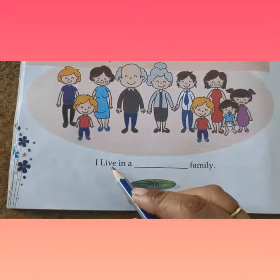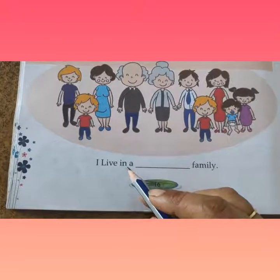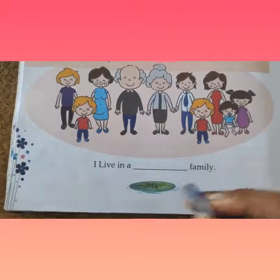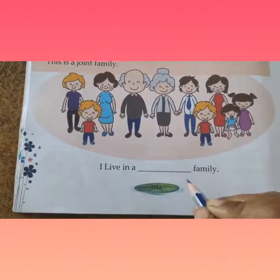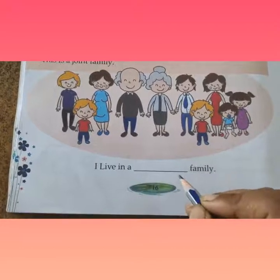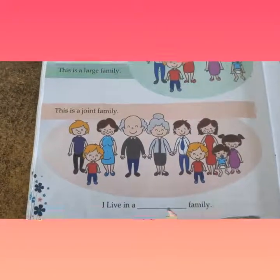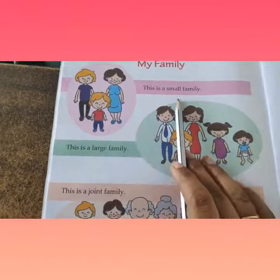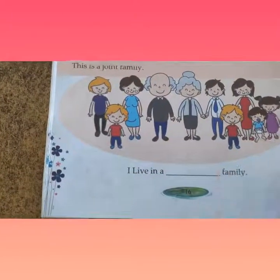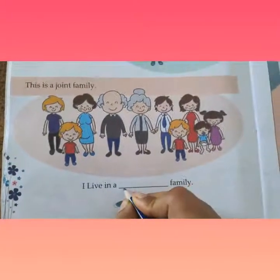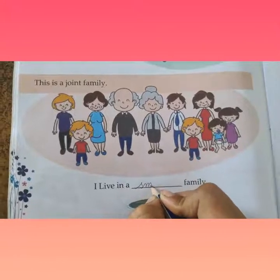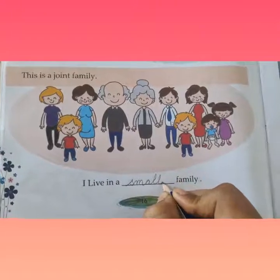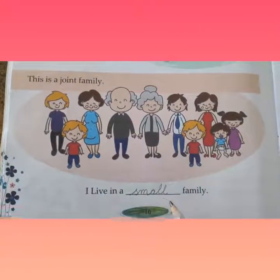I L-I-V-E in a blank F-A-M-I-L-Y — 'I live in a ___ family.' Here, in this blank place, all of you will write what type of family you belong to. If you are living in a small family, you will write here: S-M-A-L-L — small family.